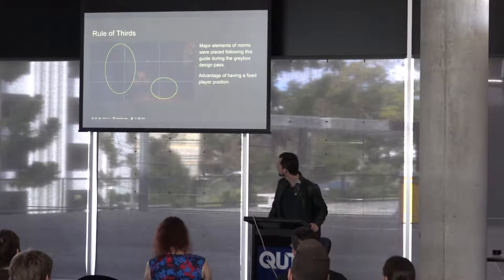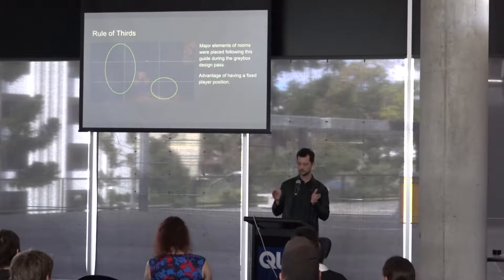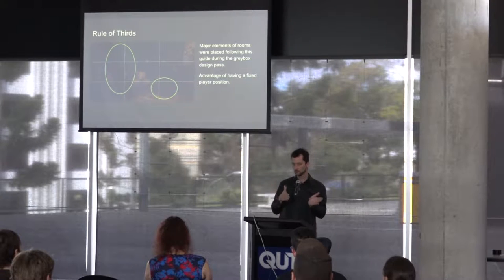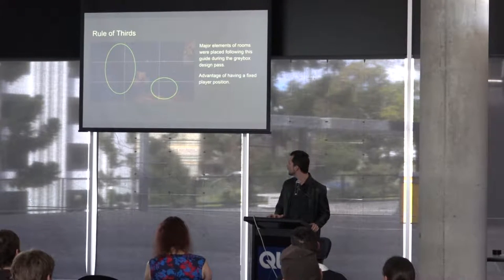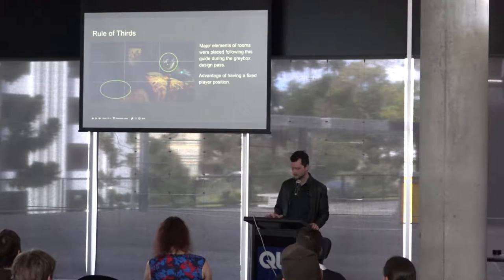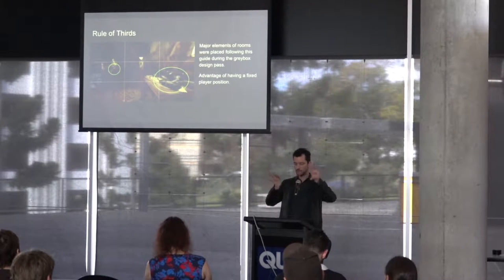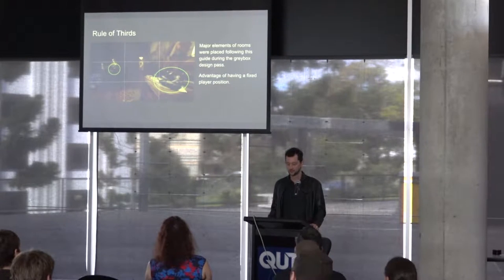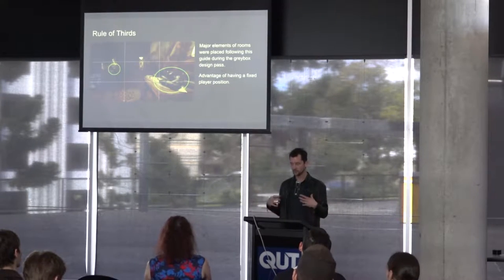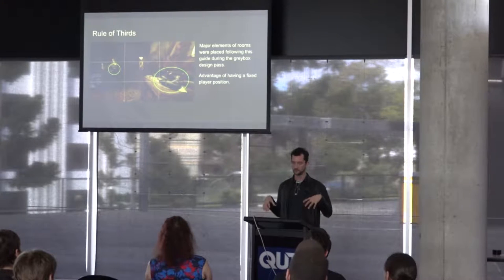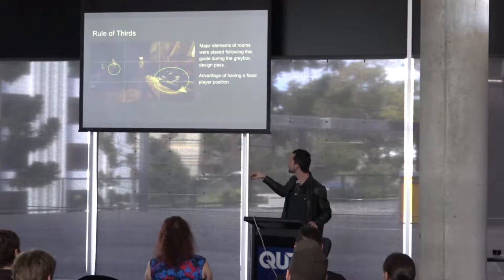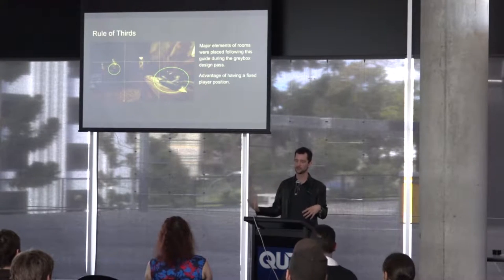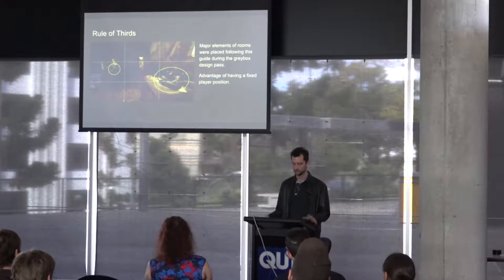Here's an example from one of the dark rooms in the game. Because I have a fixed camera position, I can ensure that pretty much anywhere the player looks, they'll have a reasonably well-composed shot. As you move around the room, the cupboard, the chest, and other puzzles each fall roughly into the composition. The important takeaway is this has to be done during the grey box stage — you must think about composition as you're laying out your level, not later. Once I was happy with how everything sat, then I did the art pass.